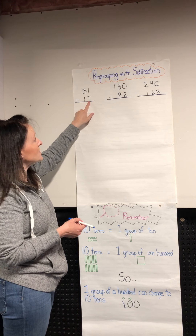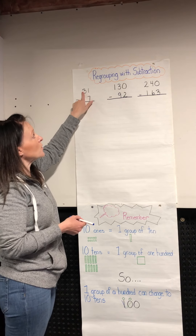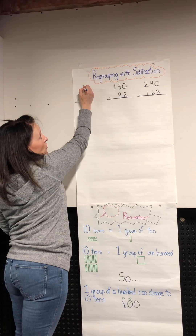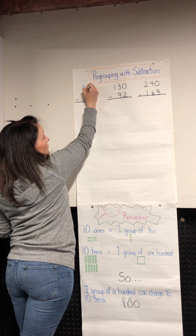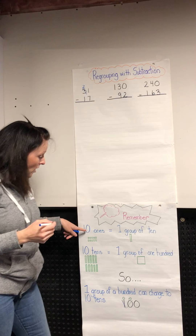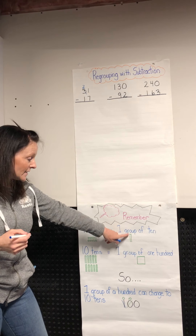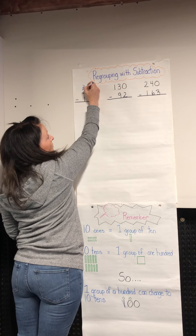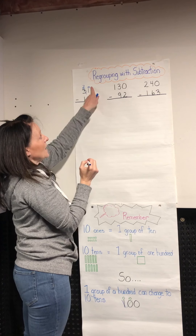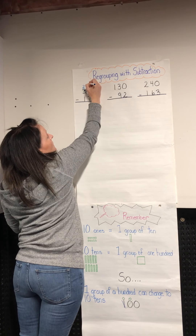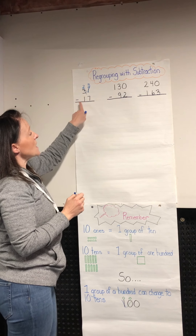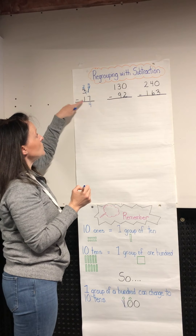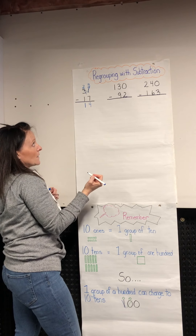We can't do it — one is smaller than seven — so we get to borrow a group of ten. If I borrow a group of ten, that means there are two left. If I bring that group of ten over, one group of ten is the same thing as ten ones. So I brought over ten ones and I had one there, so now I have eleven. Eleven take away seven is four, and two take away one is one.